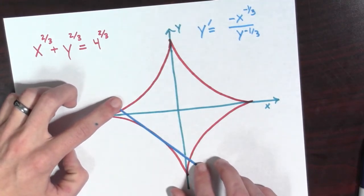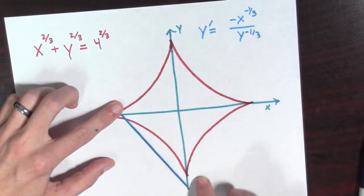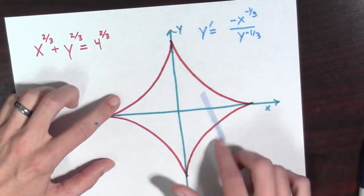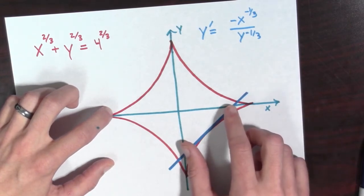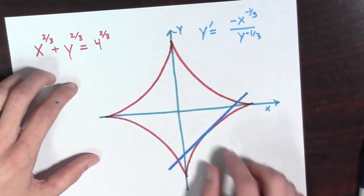And if y is negative and x is positive, and they're equal in magnitude, again our tangent line is going to have slope 1, as we can see right there.